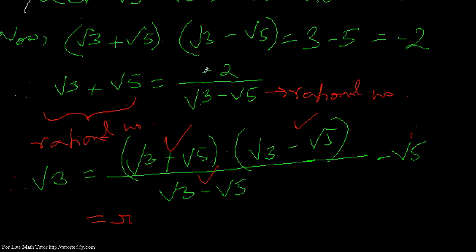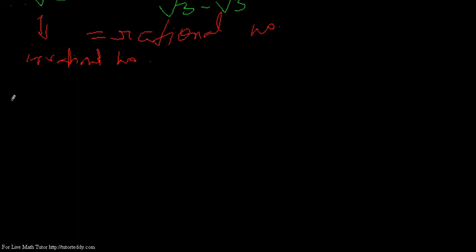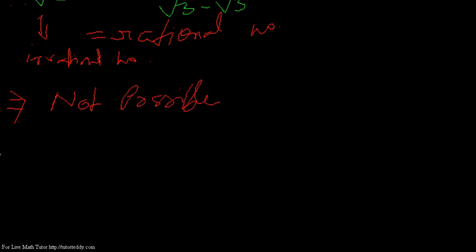We have already shown in another video that √3 is not a rational number. So here the right-hand side is coming as a rational number but √3 is an irrational number — this cannot happen, where one side is irrational and another side is rational. Therefore our assumption that √3 minus √5 is a rational number is not possible. This implies √3 minus √5 is an irrational number.